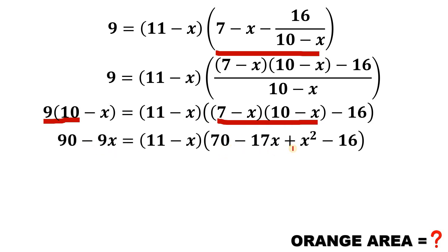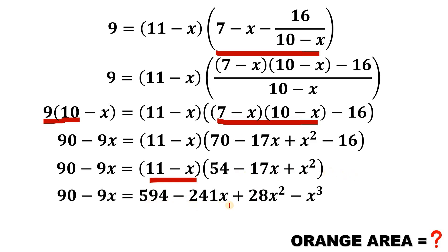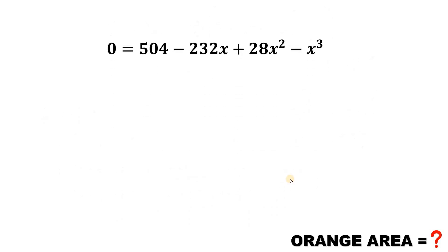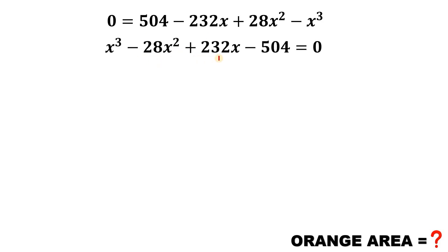Expanding further: 90 − 9x equals (11 − x)(70 − 17x + x² − 16). Combining like terms, 70 − 16 = 54, so we get 90 − 9x = (11 − x)(54 − 17x + x²). Multiplying out: 594 − 241x + 28x² − x³. Combining like terms gives 0 = 504 − 232x + 28x² − x³. The solution is not simple. This is equivalent to x³ − 28x² + 232x − 504 = 0. We solve this cubic using synthetic division.